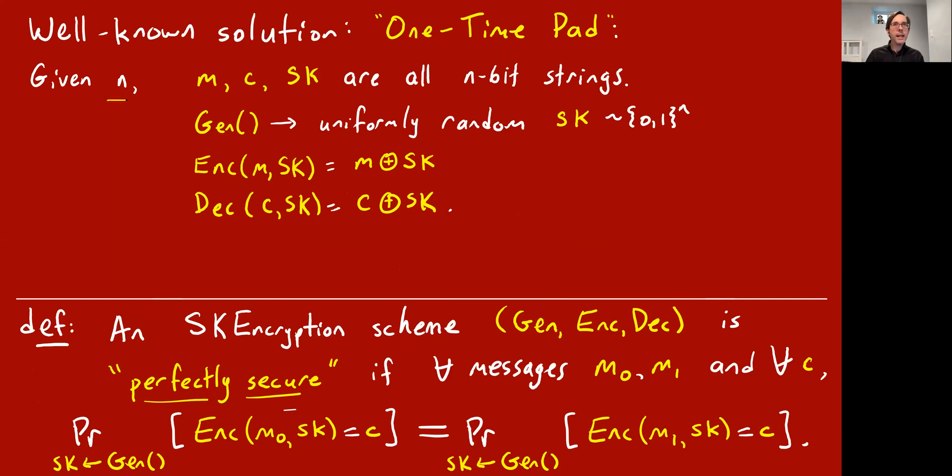So here it is. Given a parameter n, you're going to have this scheme where m, the messages, and c, the ciphertext, and also SK, the secret keys, are all n-bit strings. And it's pretty simple. The key generation algorithm just chooses a random n-bit string. And then for Alice to encode her message m with the secret key, she just XORs them together bitwise. And for Bob to decode the message, he takes the ciphertext and also XORs it bitwise with the secret key, which he knows. And XORing twice cancels things out. So this correctly recovers the message from Bob's point of view. So that's a check mark. It's a correct scheme. Bob gets the correct decryption with 100% chance.